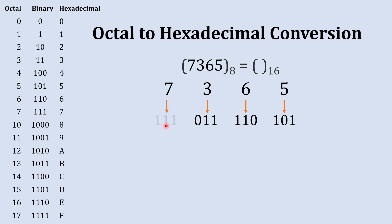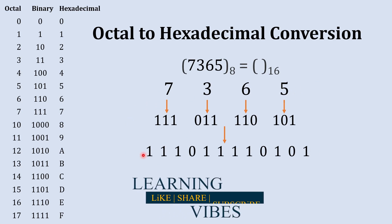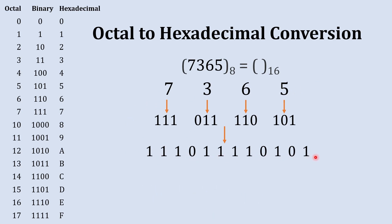Now the next number is seven, and its binary equivalent is 111. So now we have converted this octal number into binary. The combined binary number is 1 1 1 0 1 1 1 1 0 1 0 1.